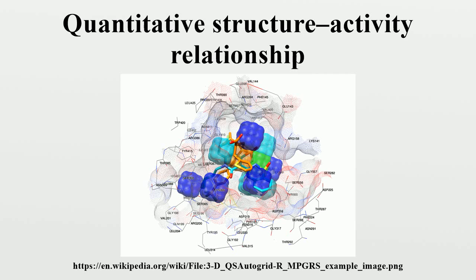In QSAR modeling, the predictors consist of physico-chemical properties or theoretical molecular descriptors of chemicals. The QSAR response variable could be a biological activity of the chemicals. QSAR models first summarize a supposed relationship between chemical structures and biological activity in a data set of chemicals, and second, predict the activities of new chemicals.